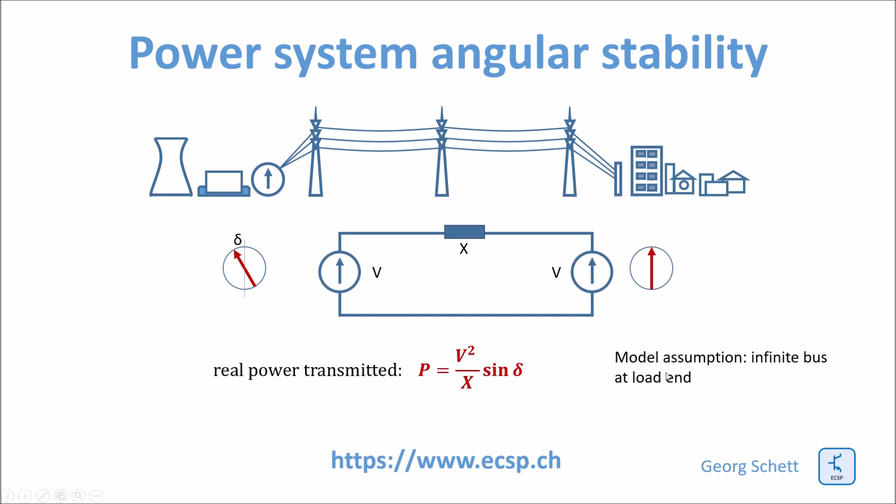The function of this curve I have shown before is as follows. So the power is equal to the square of the voltage at both line ends, the maximum voltage, divided by the impedance of the circuit times sinus theta. And this is this angle we were talking about.